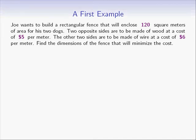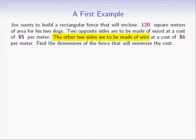First, let's make sure we understand the question. We need to find the dimensions of a rectangle whose area must be 120 square meters. We also need to minimize the cost associated with this rectangle. Two opposite sides of the fence will be made of wood and the other two of wire. We know the cost of wood and wire per meter, which will enable us to write an expression for the cost and then minimize it.